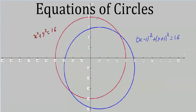Now here we have a couple of circles actually graphed onto a coordinate system. I just marked off the axes. x squared plus y squared equals 16. That 16 represents r squared in our general equation. So don't ever confuse this number with the actual radius — this number is the square of the radius. So the radius would be 4. And if you look at our red circle, you can see that it crosses our axes at 4 units from the origin all the way around. The distance from here to the origin would still be 4 units.